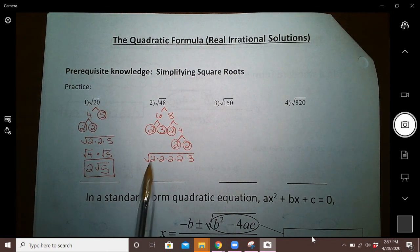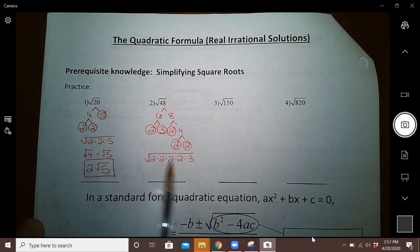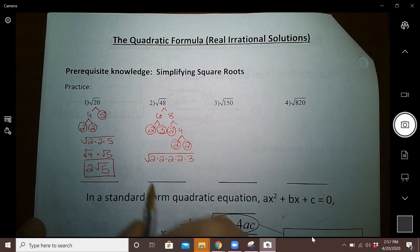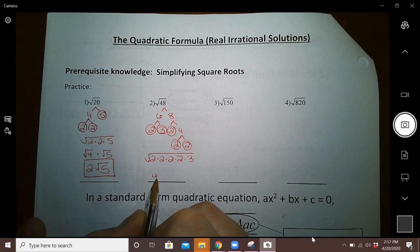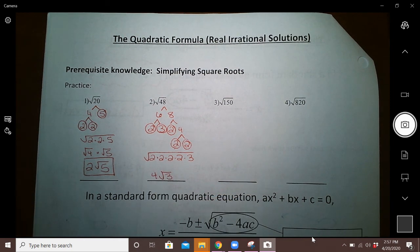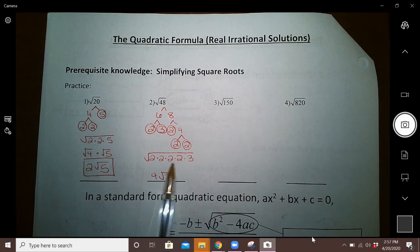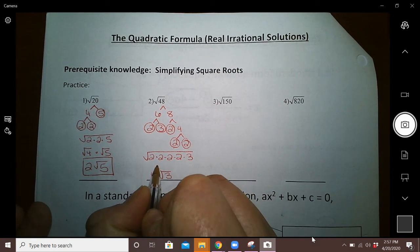Okay, well if you're doing the shortcut method, you have two groups of two, which means there's going to be a 4 out front and a 3 left over on the inside. If you want the longer explanation, multiply all of this together: 2 times 2 is 4, times 2 is 8, times 2 is 16.